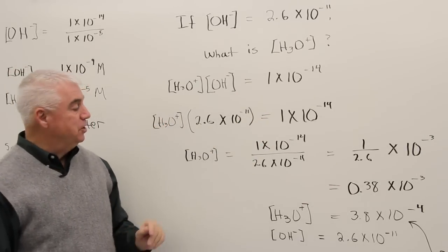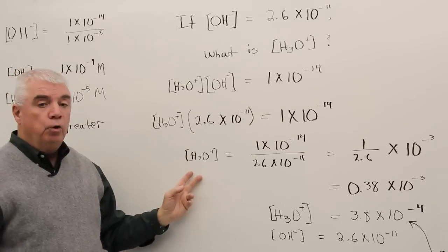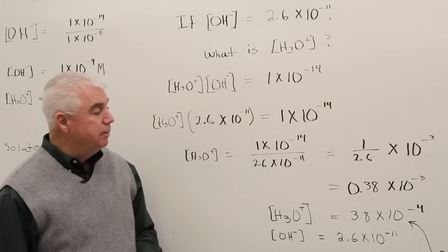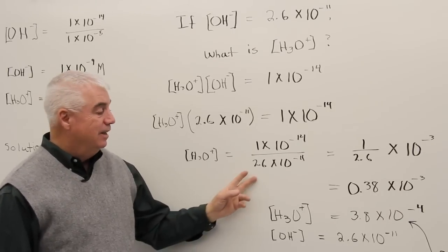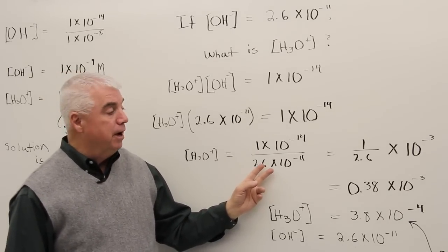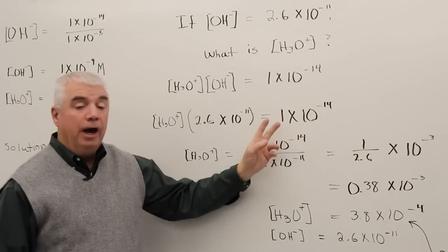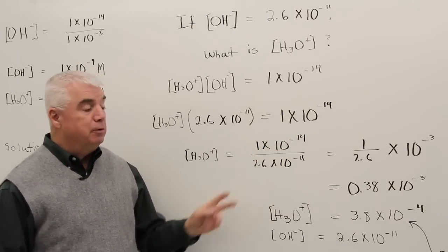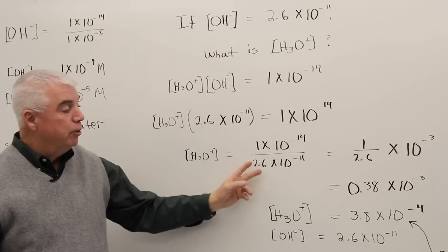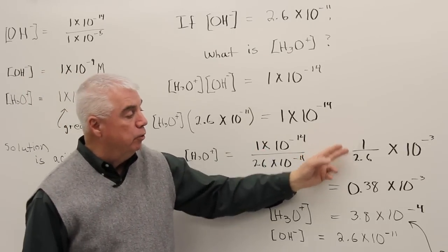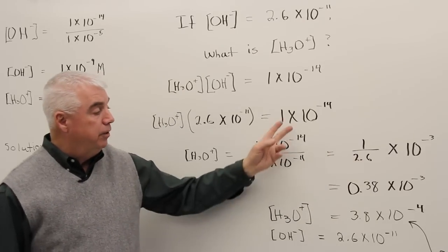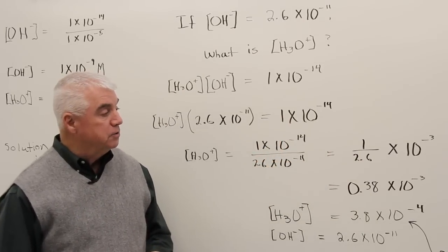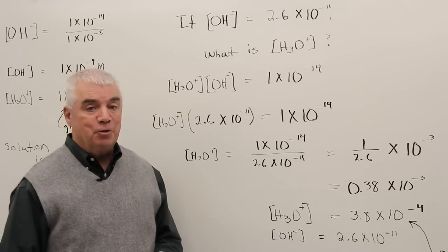Here's the expression: 1 times 10 to the minus 14 divided by 2.6 times 10 to the minus 11th. Some of you have calculators that easily handle these exponents. I'm a little bit old-fashioned. I'm going to rearrange this into 1 over 2.6, and then solve for this exponent. 10 to the minus 14 over 10 to the minus 11 is 10 to the minus 3.